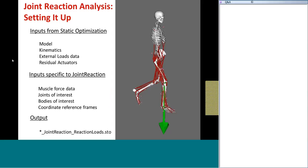After that, you have options specific to joint reaction analyses. First and most importantly is the option for specifying a file that contains the time history of muscle forces — this is how we'll apply our static optimization results. Next, we have options for specifying the joints you're interested in, as well as how to represent the reaction loads that are reported. If all goes well, OpenSim will perform a joint reaction analysis and print a single file containing all the reaction loads, with a suffix of joint_reaction_ReactionLoads. That naming reminds you that this file was produced by joint reaction analysis and that you're looking at all reaction loads.